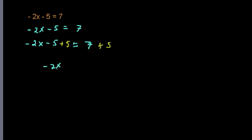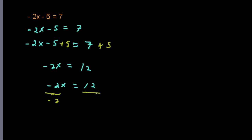We have come a long way to isolating our variable. Now we have negative 2x equals 12. We use the multiplication property of equality in the form of division — we want just a single 1x, so we divide both sides by negative 2. Negative 2 divided by negative 2 is 1x, and we can just write x. And 12 divided by negative 2 is negative 6. So x equals negative 6.